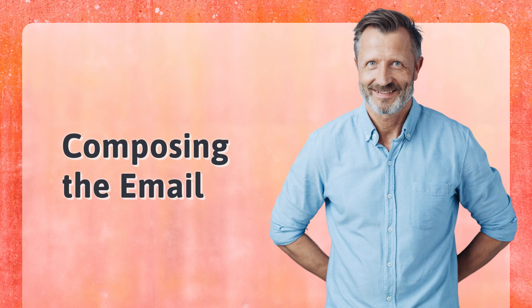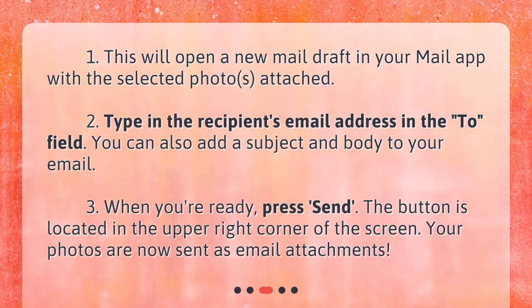Composing the email. This will open a new mail draft in your mail app with the selected photos attached. Type in the recipient's email address in the To field. You can also add a subject and body to your email. When you're ready, press Send — the button is located in the upper right corner of the screen. Your photos are now sent as email attachments.